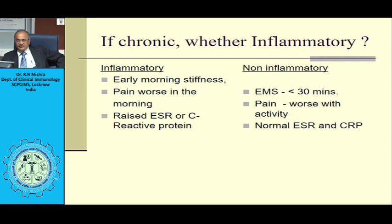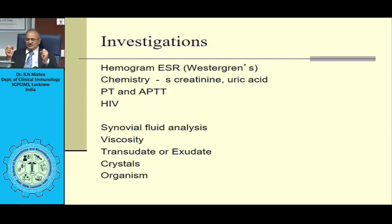If chronic, clinical distinguishing features with laboratory support are used. Parameters to distinguish inflammatory from non-inflammatory arthritis include early morning stiffness — less than 30 minutes is non-inflammatory, more than 30 minutes is inflammatory — pain that is worse in the morning, and a raised ESR or C-reactive protein.